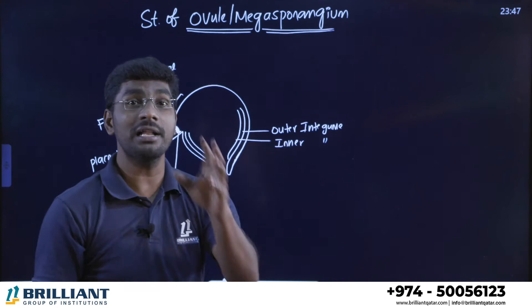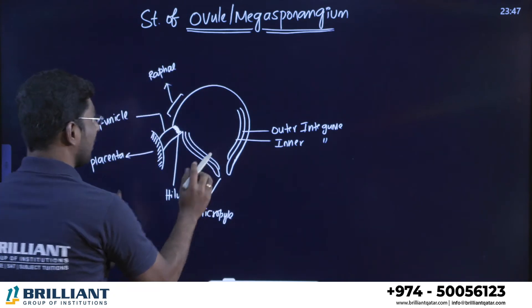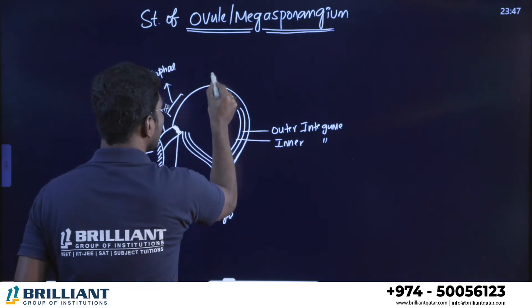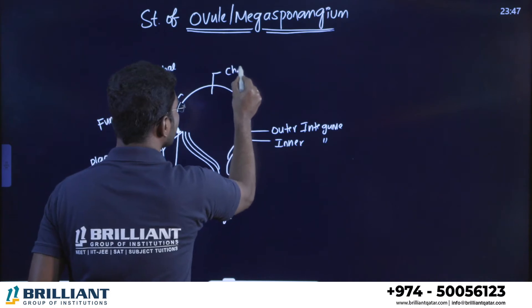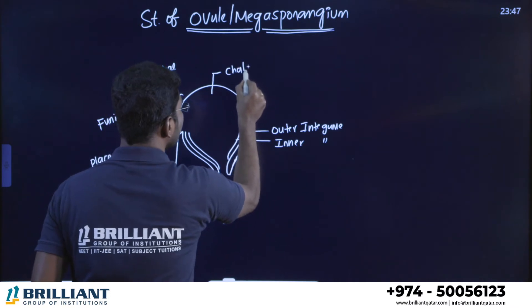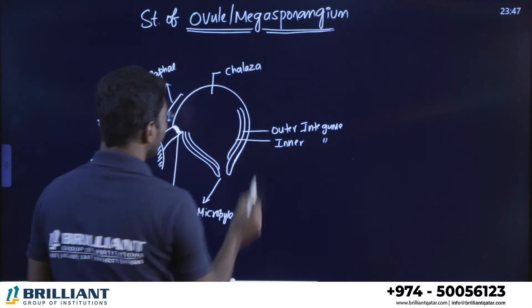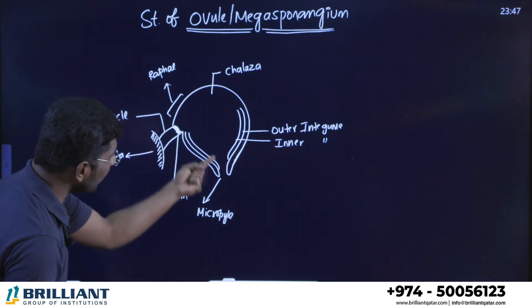Exactly opposite to the micropyle there is another part of the ovule known as the chalaza. So one end is the chalaza end and the other end is the micropyle end.